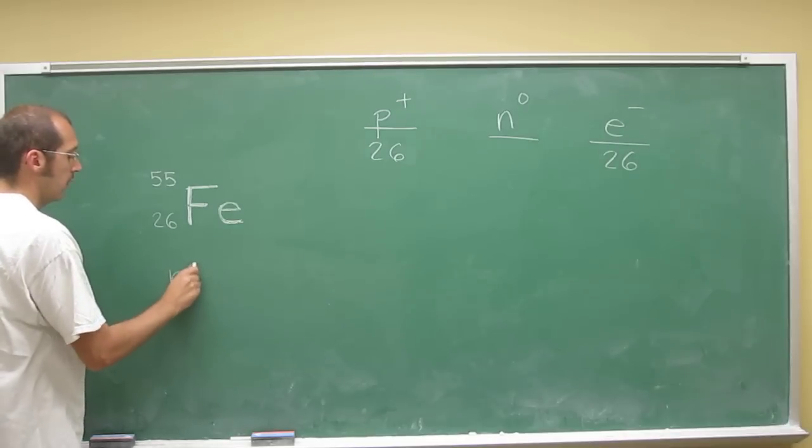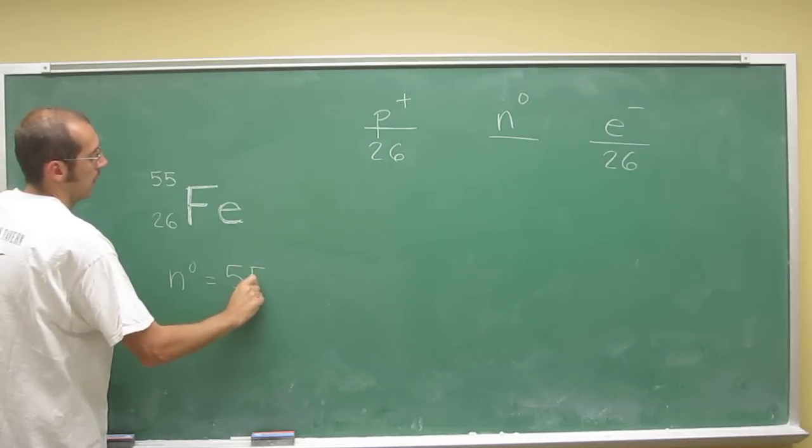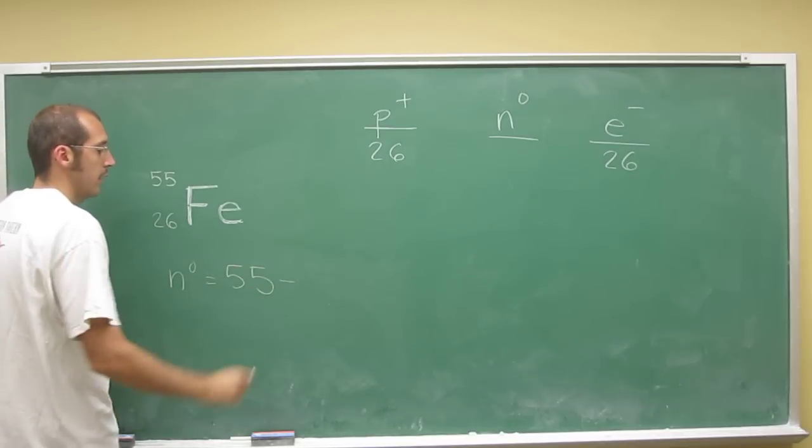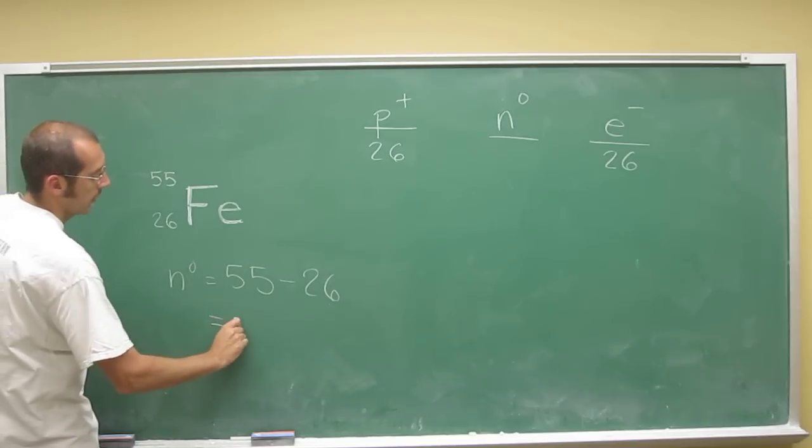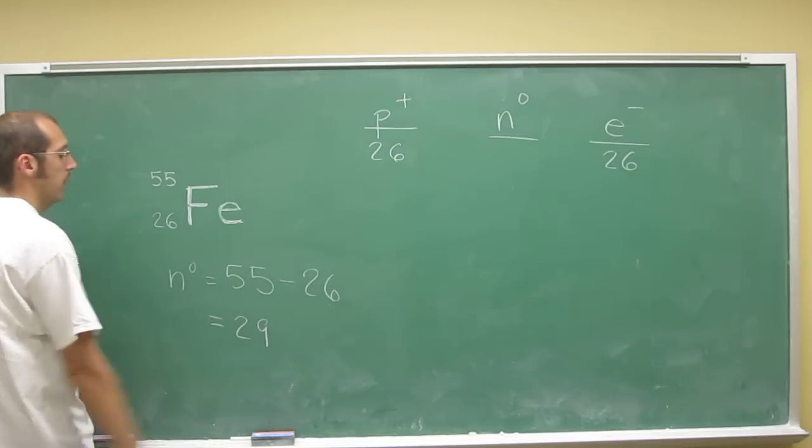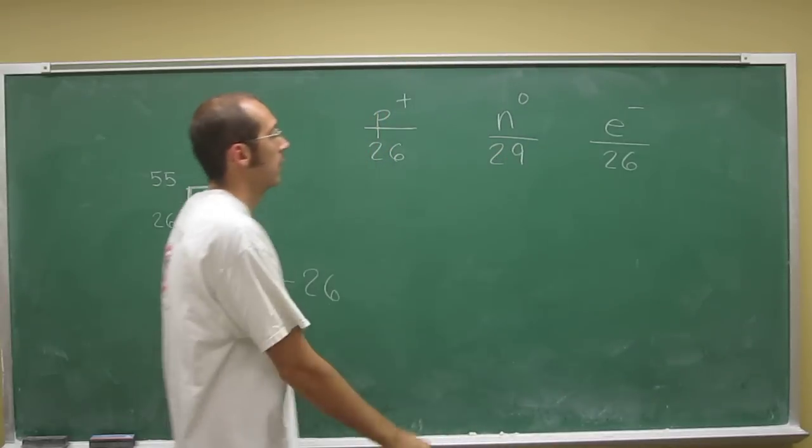And the number of neutrons, remember, is the mass number minus the atomic number. So, 55 minus 26, 29, so 29 neutrons.